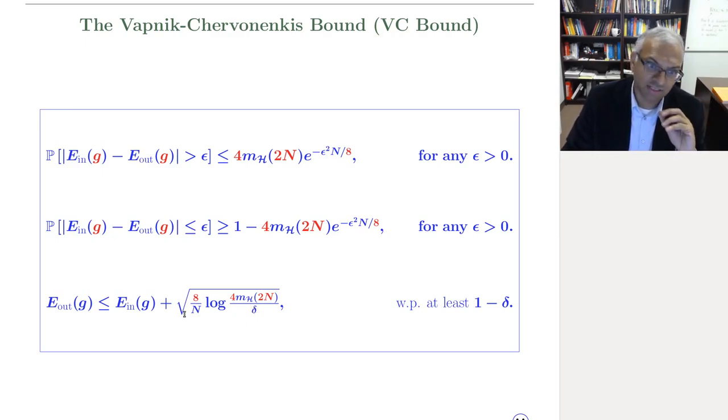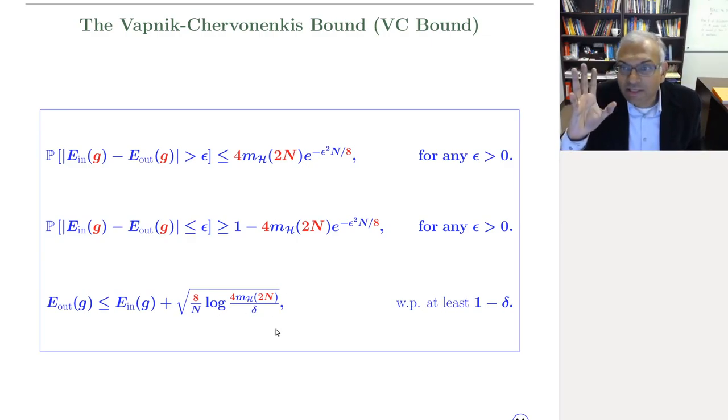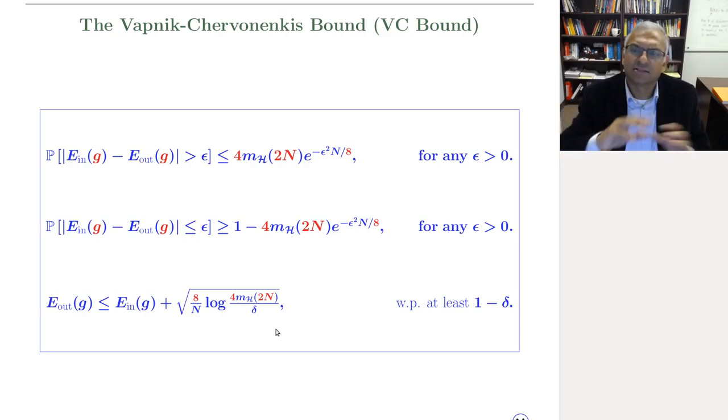On the other hand, for good hypothesis sets, this error bar drops to zero, and we have established in principle the first step of machine learning, which is that with sufficiently large n as determined by your error tolerance and probability tolerance and the growth function,